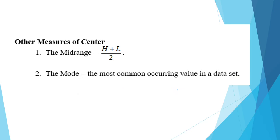We also have other measures of center. The midrange is equal to the highest value plus the lowest value divided by two. And this one might have some problems because it only takes into account two values. So it's going to be affected by those outliers since the highest value could be an outlier or the lowest value could be an outlier. The mode is the most common occurring value in the data set and is usually easy to find.